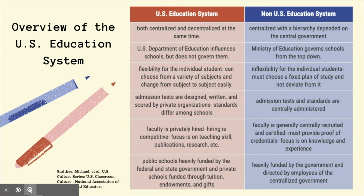We have two different types of schools: public schools that are heavily funded by the federal and state government, and private schools that are funded through tuition, endowments, and gifts. The University of Tennessee is a public school, so most of our funding comes from the federal and state government rather than through tuition, endowments, and gifts as some other private schools in the state and country.